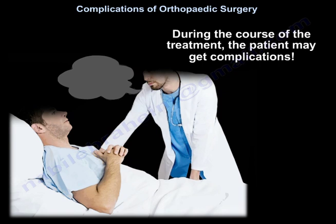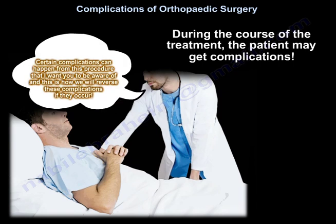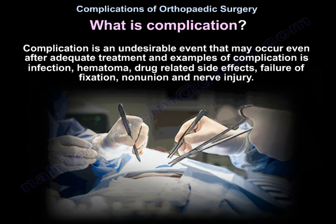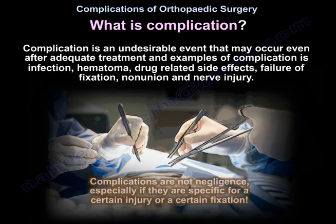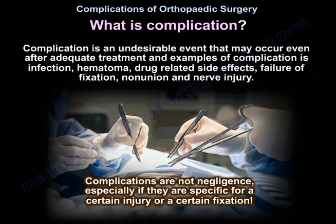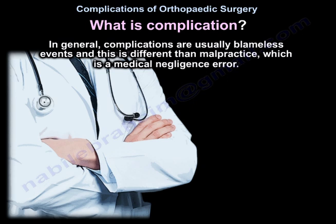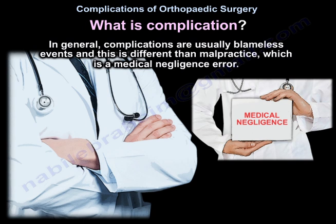During the course of treatment, the patient may get complications. Complication is an undesirable event that may occur even after adequate treatment. Examples include infection, hematoma, drug-related side effects, failure of fixation, non-union, and nerve injury. Complications are not negligence, especially if they are specific to a certain injury or fixation. In general, complications are usually blameless events — this is different from malpractice, which is a medical negligence error.